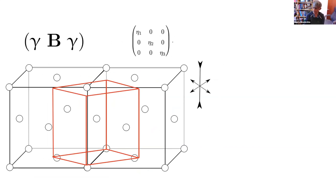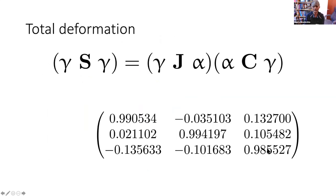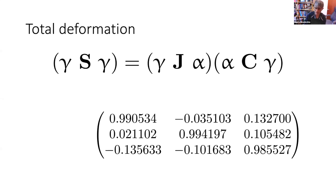Given the orientation relationship and correspondence matrix, the deformation required to take the austenite into the product lattice can be obtained from the experimentally measured orientation relationship and the correspondence matrix. This is a physical deformation which includes both a pure deformation — where the principal axes are not rotated — and a rigid body rotation. From this it is straightforward to work out the eigenvectors and eigenvalues of the deformation. In the case of the austenite-to-ferrite transformation it is possible to find an invariant line, which is why the martensitic transformation is possible.